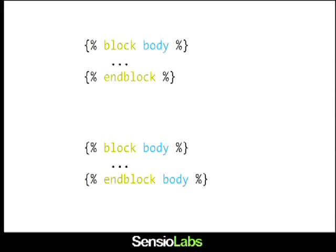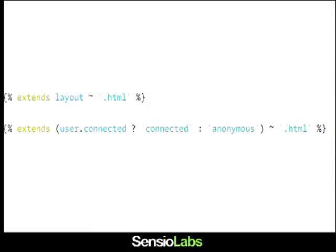When you have a bunch of blocks, it can be difficult to understand which block is being ended. You can add the name of the block to the endblock tag — Twig will check it's the right one, but it's more of a help for you to identify which block you are ending. When using extends or include, the argument is an expression, so here the layout can be dynamic — the layout of a page can be different based on the fact that the user is connected or not.